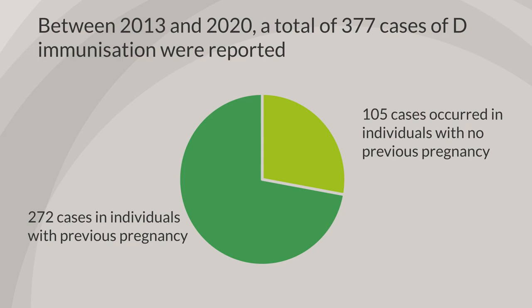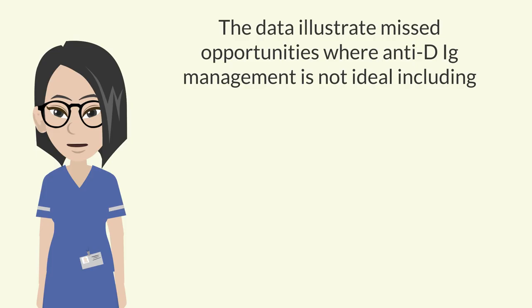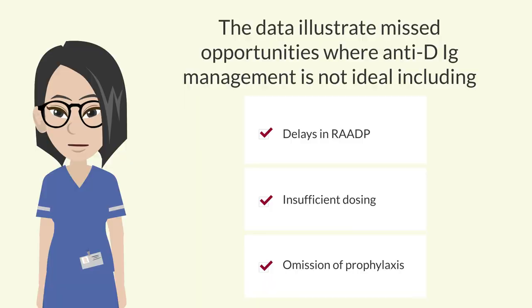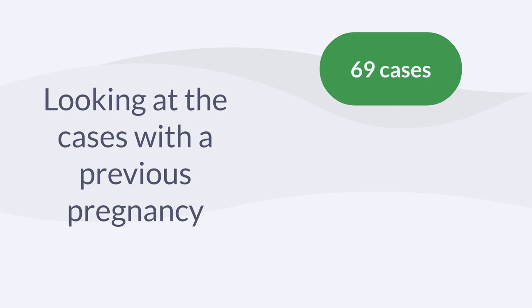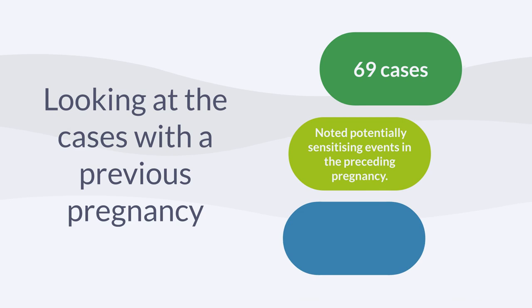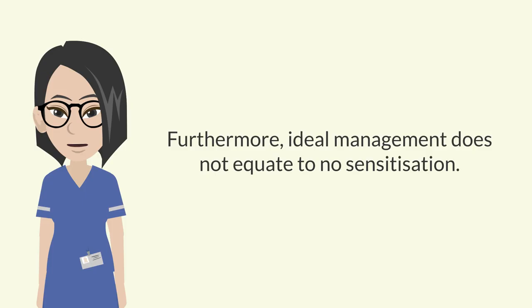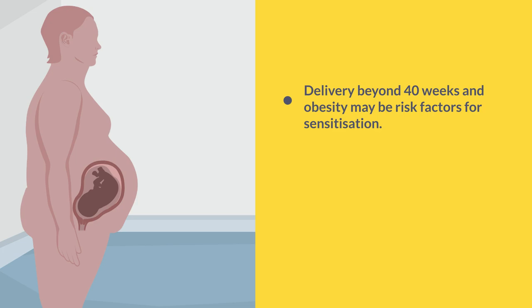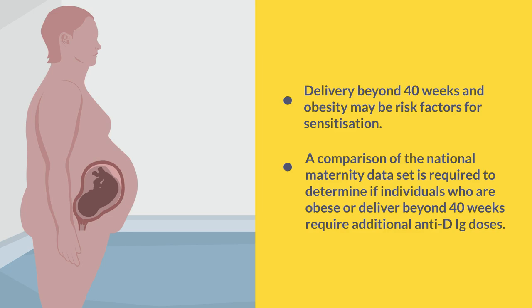The data illustrate missed opportunities where anti-D Ig management is not ideal, including delays in RAADP, insufficient dosing, and omission of prophylaxis. Looking at cases with a previous pregnancy, a total of 69 cases noted potentially sensitising events in the preceding pregnancy, of which only 46 were managed correctly. Furthermore, ideal management does not equate to no sensitisation. Delivery beyond 40 weeks and obesity may be risk factors for sensitisation. A comparison with the National Maternity Dataset is required to determine if individuals who are obese or deliver beyond 40 weeks require additional anti-D Ig doses.